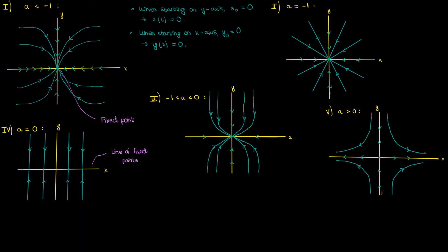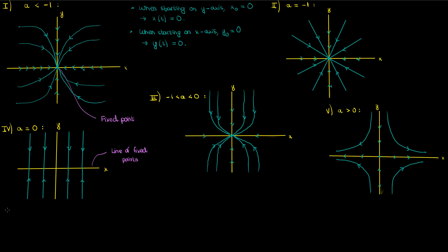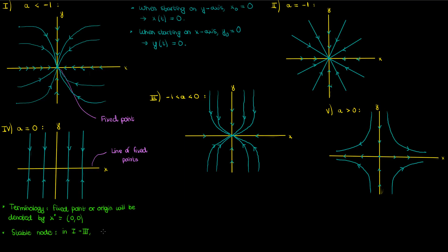So now we've discussed all five scenarios. Let's revisit these scenarios and define some important terminology for two-dimensional dynamical systems. For the purposes of defining terminology, we'll call our fixed point — the origin — x-star, sometimes written with an arrow to denote it's a point rather than a scalar. The first term is a stable node. In scenarios 1 to 3, the fixed point x-star is a stable node — a point which attracts all nearby trajectories towards it. In the special case of scenario 2, x-star is called a symmetrically stable node, or a star, because trajectories converge towards it symmetrically and at an equal rate from all directions.